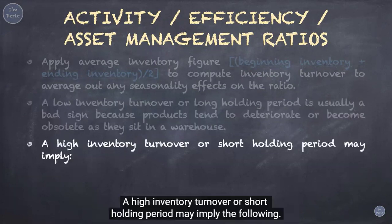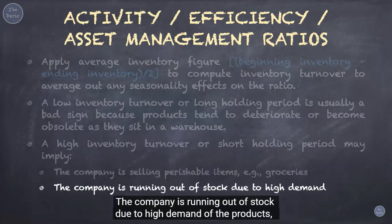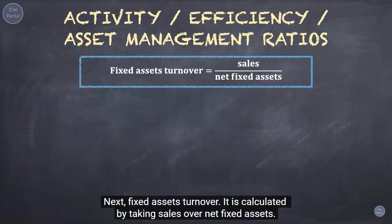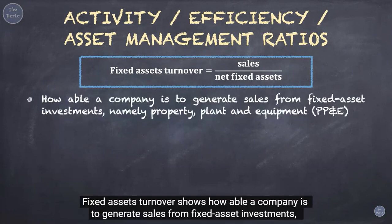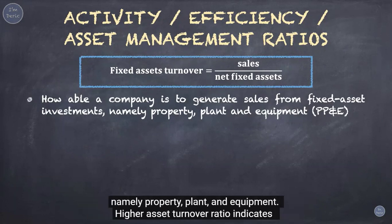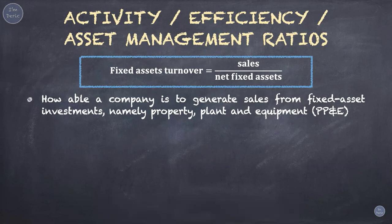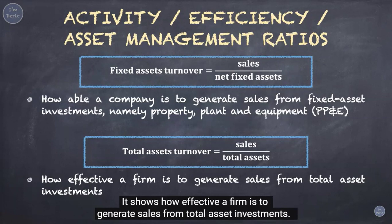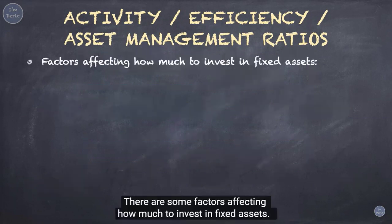A high inventory turnover or short holding period may imply that the company is selling perishable items such as groceries, or that it is running out of stock due to high demand, which may cause it to lose sales to competitors. Next, fixed assets turnover is calculated by taking sales over net fixed assets. It shows how able a company is to generate sales from fixed asset investments such as property, plant, and equipment — a higher ratio indicates more effective utilization. A similar ratio, total assets turnover, is calculated by taking sales over total assets, showing how effective a firm is at generating sales from total asset investments. These ratios can vary widely from one industry to another.